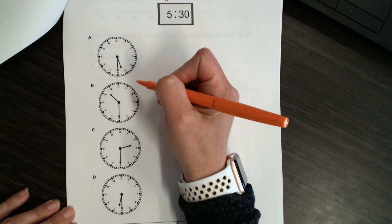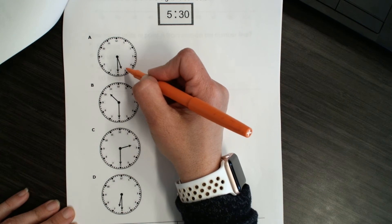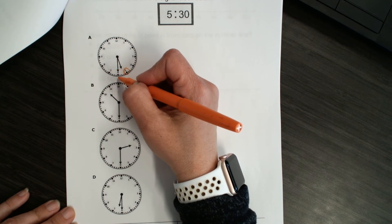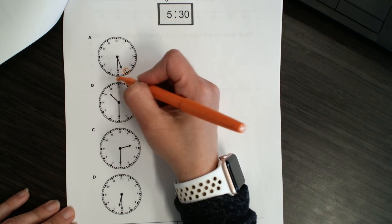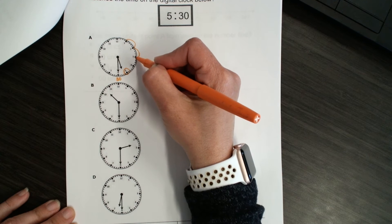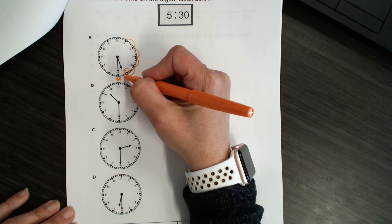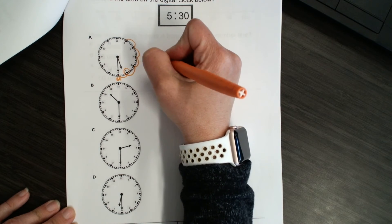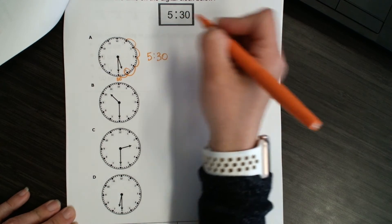I'm going to check my hour hand first. It's in between the 5 and the 6. So, I know it's to the 5. And then, when my minute hand's on the 6, I know that's 30. 5, 10, 15, 20, 25, 30. So, I can already tell that this is our clock. This clock shows 5:30.